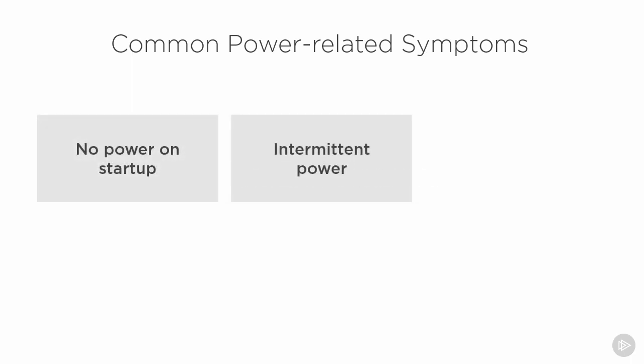Another symptom is intermittent power — maybe the machine powers up but every now and then randomly shuts down. That could be due to overheating, but it could also be because certain tasks require more power draw, such as when all disks are active if we have multiple disks. We might end up with intermittent power loss. Another consideration is random card or device failure — the machine might reboot, or a component like a disk might not get enough power and doesn't behave properly, which can be difficult to troubleshoot.